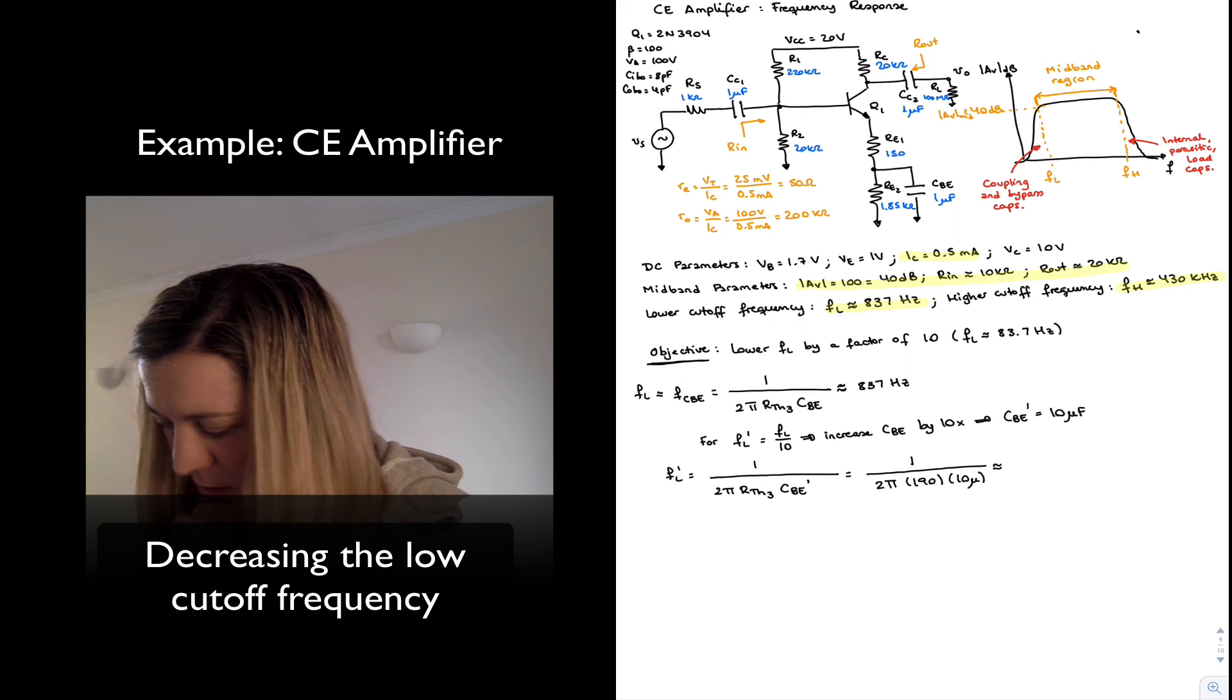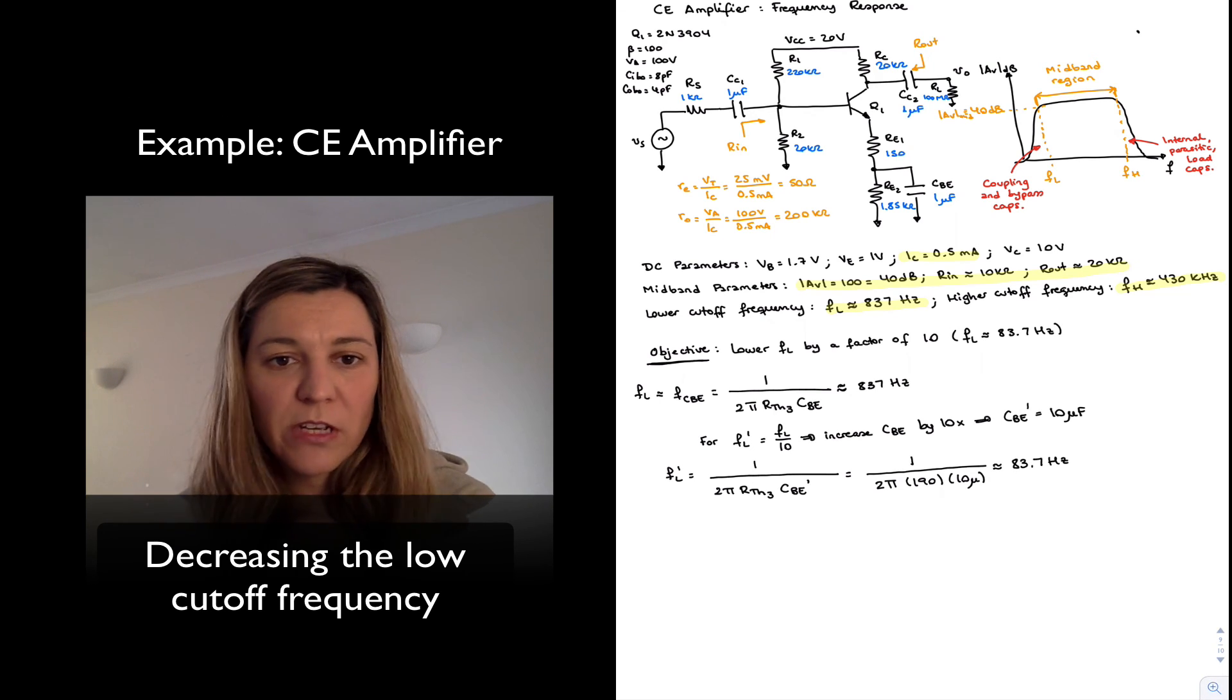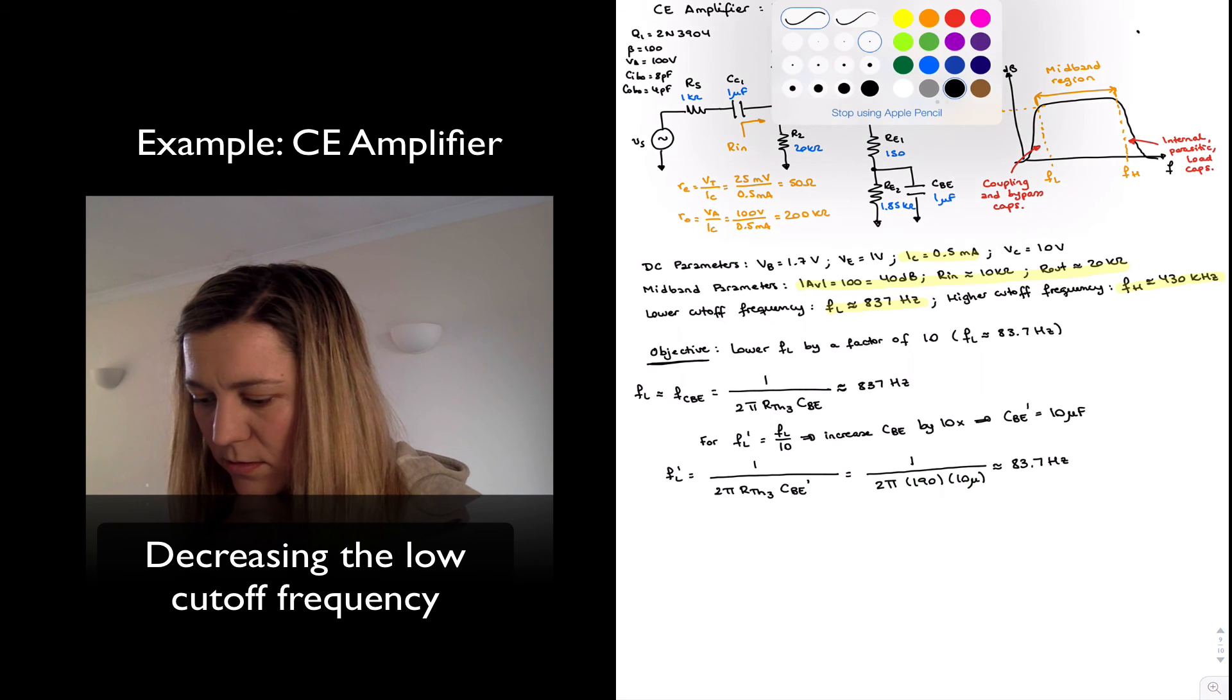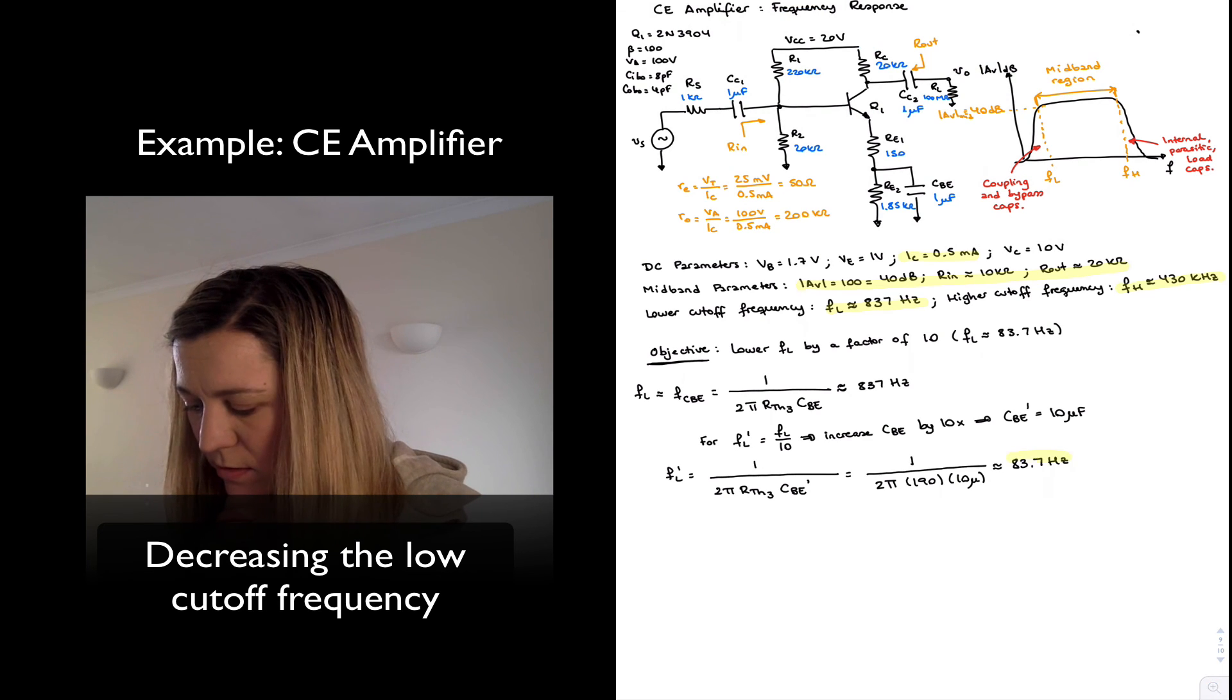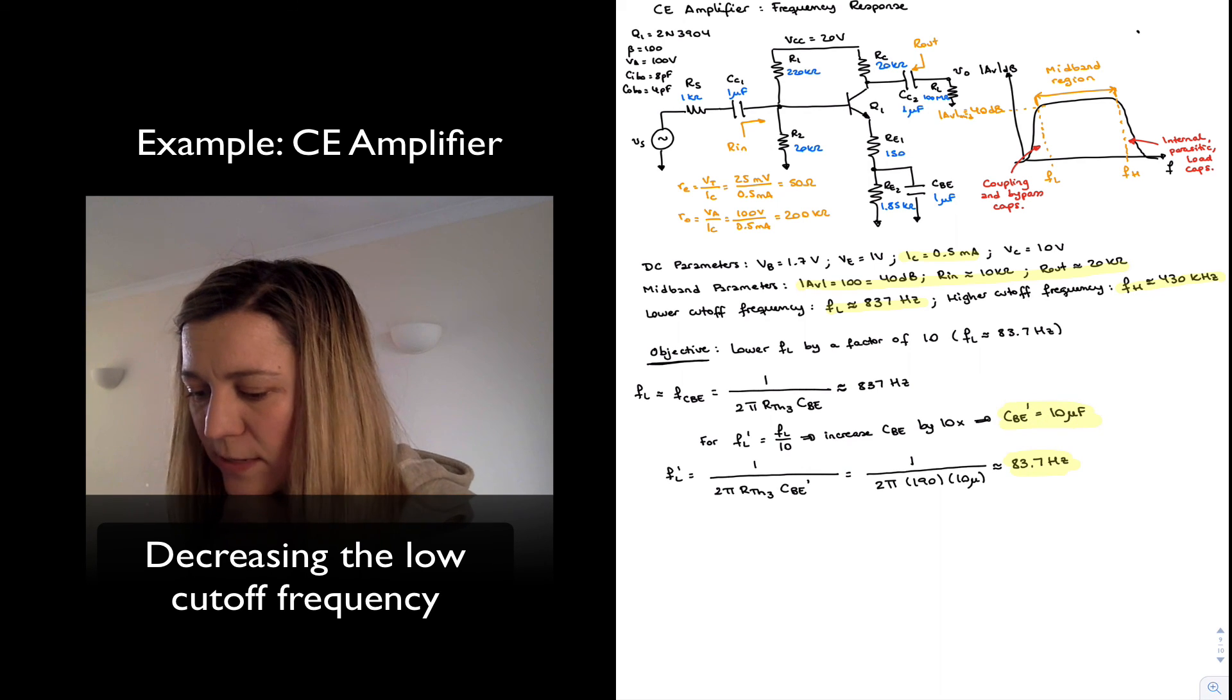So this will be 1 over 2 pi times 190 times 10 microfarads. And we can see that this, in effect, will give us a cutoff frequency of around 83.7 Hz. And that's it. We have decreased our low cutoff frequency by increasing the dominant capacitor by a factor of 10.